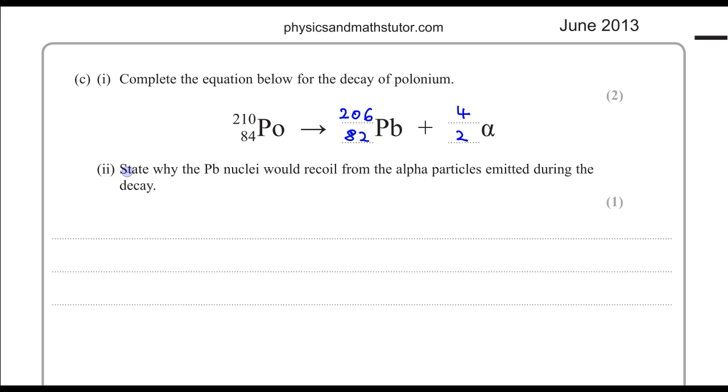We are then asked to state why the lead nuclei would recoil from the alpha particles emitted during the decay. So this is telling that if we start with the polonium nucleus and there is the decay, the result would be that we have an alpha particle going in one direction. The lead nucleus would be going in the other direction. So the nuclei would recoil.